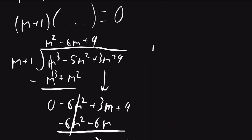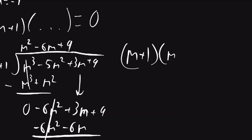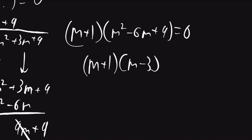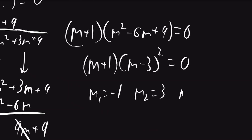So our expression factors as m plus 1 times m squared minus 6m plus 9 equals 0. We can factor the second expression further: it'll be m plus 1 times m minus 3 squared equals 0. So our roots are m1 equals negative 1, m2 equals 3, and m3 equals 3.